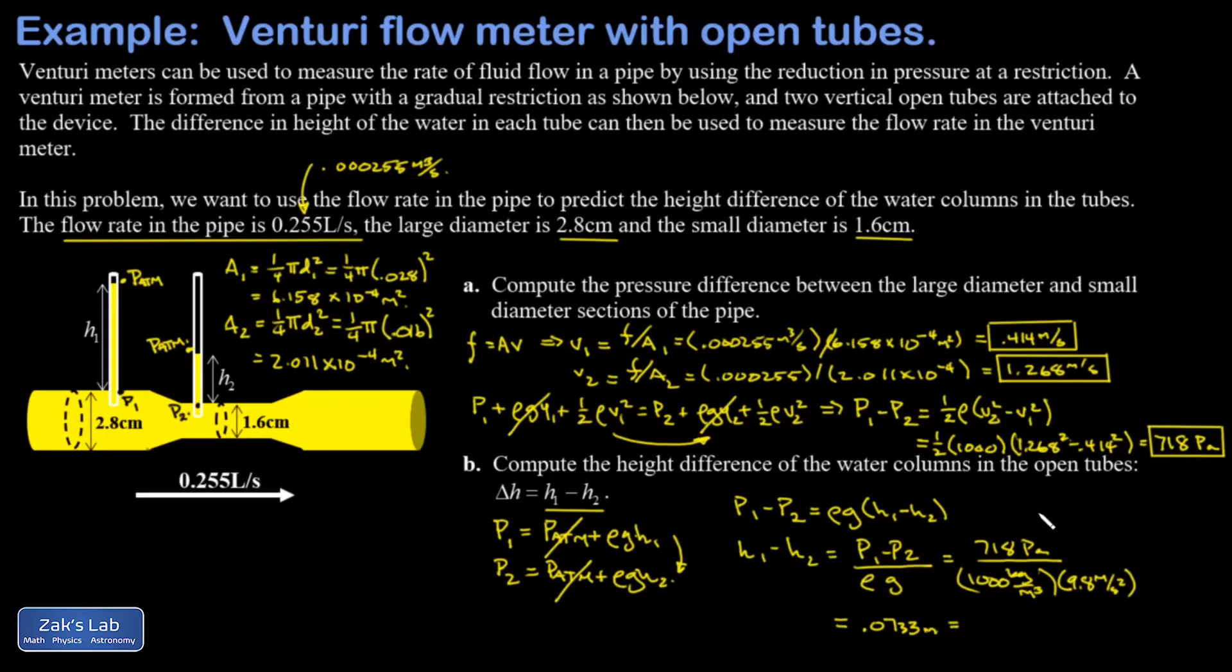If you're curious how it comes out to meters, you would start by replacing the pascals with newtons per meter squared, and then a newton is a kilogram meter per second squared, and it should simplify to meters. The most appropriate units for our final answer would be centimeters, so 7.33 centimeters, and we're done.